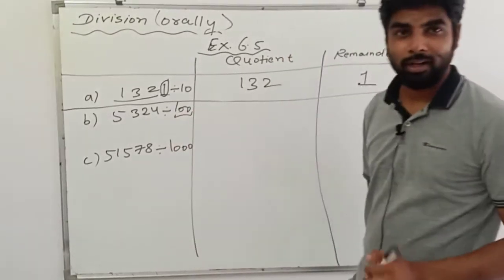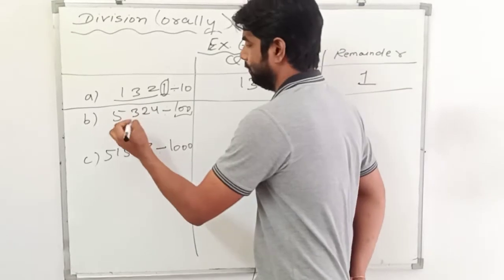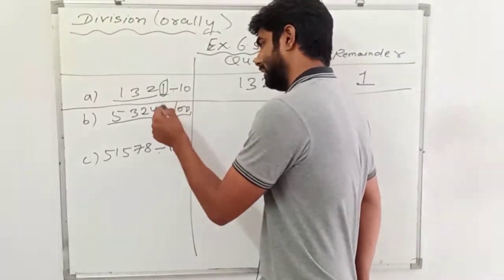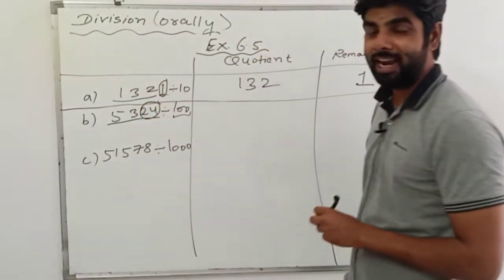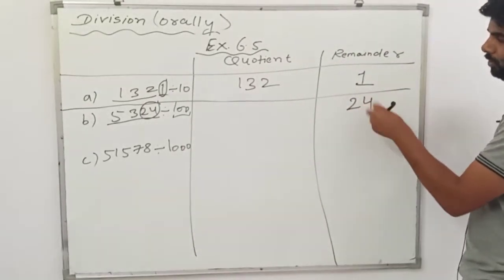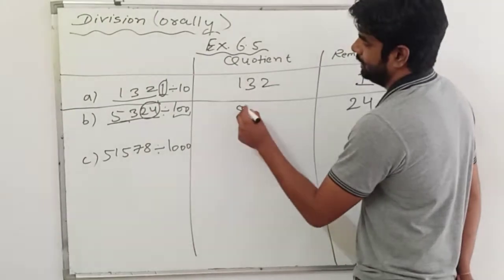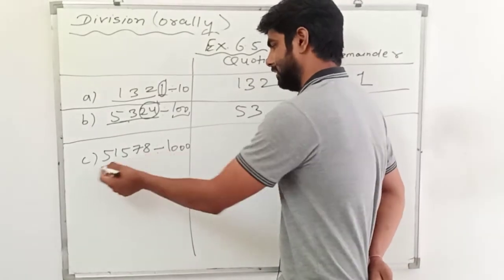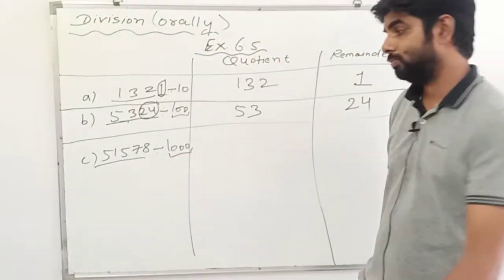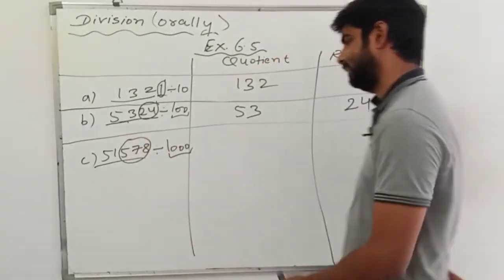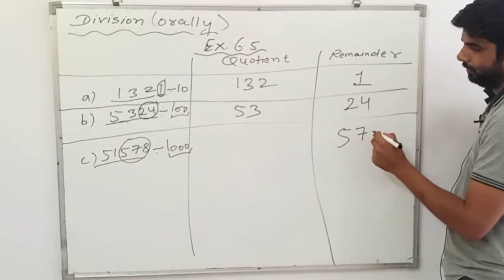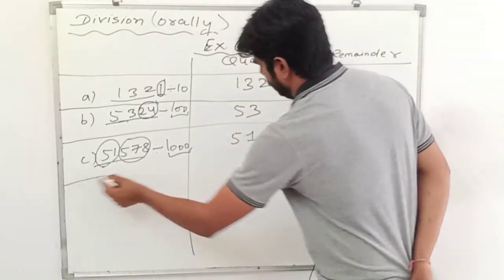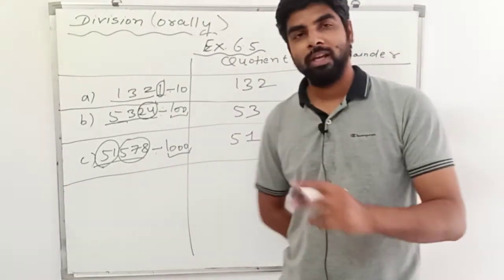For 5324 divided by 100 — there are two zeros in 100, so we take two digits from the right. The remainder is 24 and the rest, 53, is our quotient. For 51578 divided by 1000 — there are three zeros in 1000, so we take three digits from the right. The remainder is 578 and the remaining digit, 51, becomes our quotient. This is how you solve Exercise 6.5.